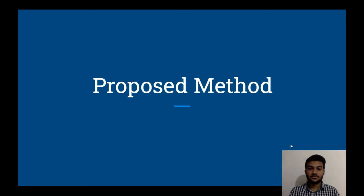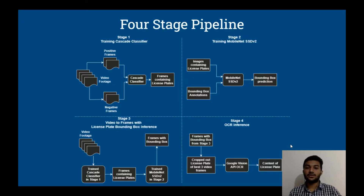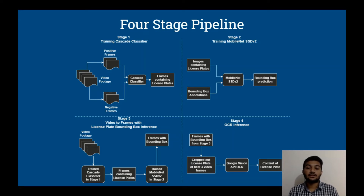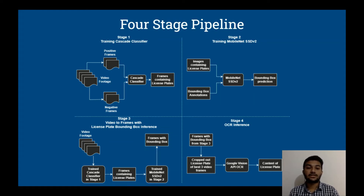My name is Ali Fashafi. Let's look into our proposed method with its four-stage pipeline. In the first stage, we train the Cascade classifier using positive and negative samples — positive samples contain license plate frames and negative frames do not. In the second stage, we train a MobileNet SSD V2 using the license plate image dataset along with their corresponding bounding boxes, after which MobileNet SSD can predict bounding boxes for license plates.